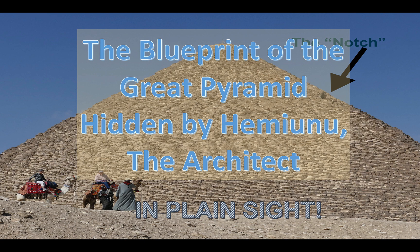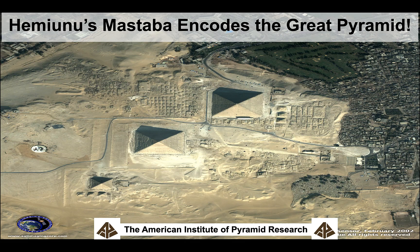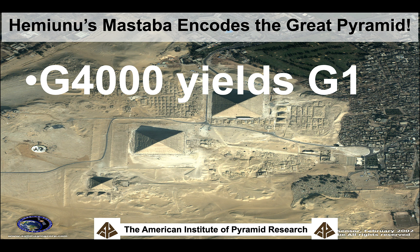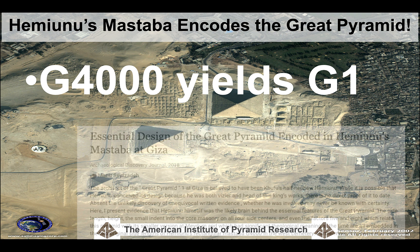Thanks for joining. We've got an interesting study for you today: the blueprint of the Great Pyramid, hidden by Hemiunu, the architect, in plain sight. Hemiunu's mastaba — the place where he's buried — is in the western field at Giza and it encodes the Great Pyramid. It's been given the designation G4000 by Egyptologists, and the Great Pyramid is called G1. So G4000 yields G1.